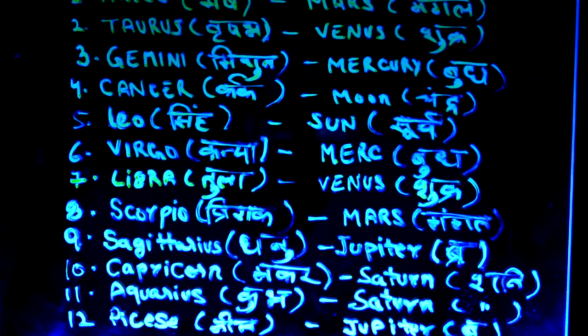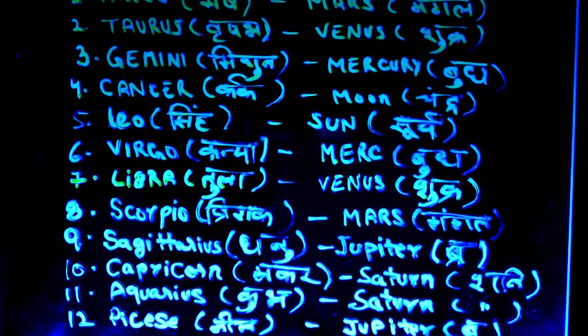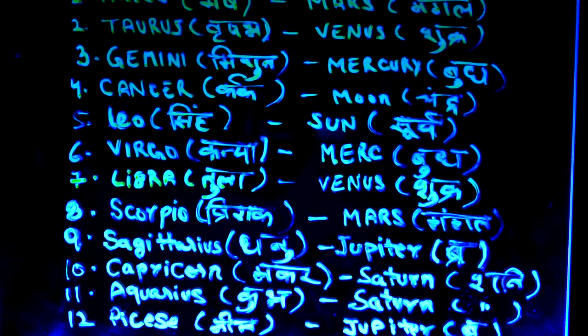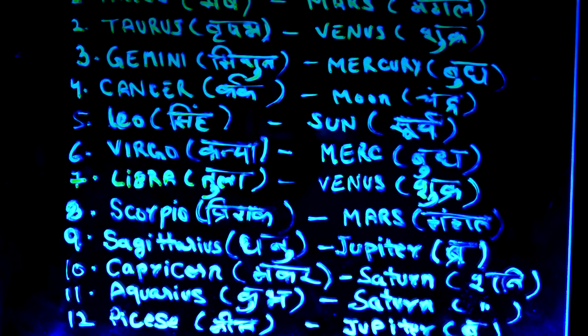Don't be scared by all this — it is very easy when you get it. It is just the 12 names that may seem overwhelming, but just be patient. I will tell you and clarify each and everything.